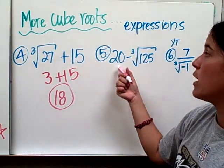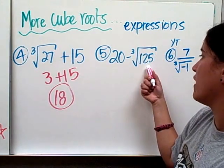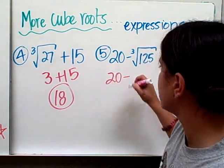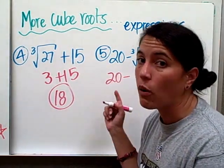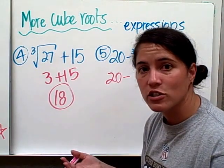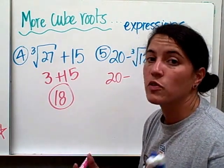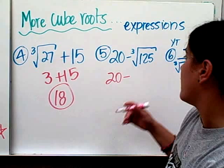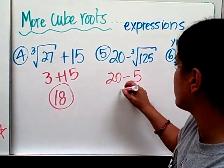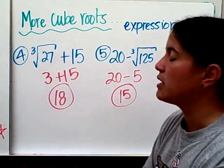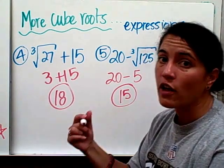Number 5, 20 minus the cube root of 125. So 20 minus the cube root of 125. If you don't remember, then look back at the chart that you just copied. But I know the cube root of 125 is 5. And 20 minus 5 is 15.